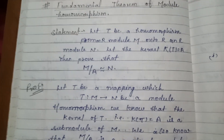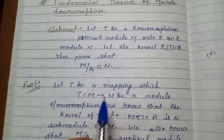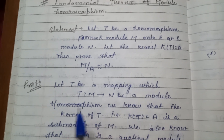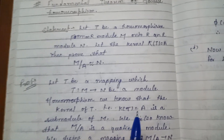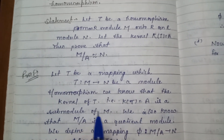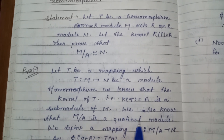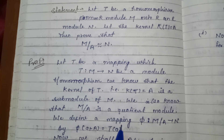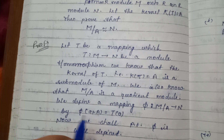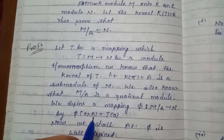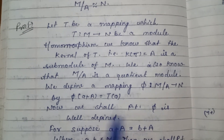For proving this, let T be a mapping from M onto N, a module homomorphism. We know that the kernel of T, K(T) = A, is a submodule of M. We also know that M/A is a quotient module. We define a mapping phi such that phi: M/A tends to N, by phi(a + A) = T(a).